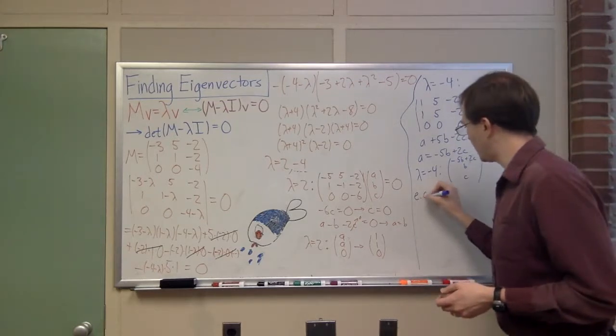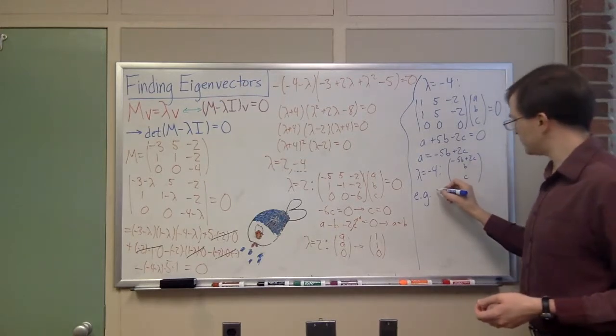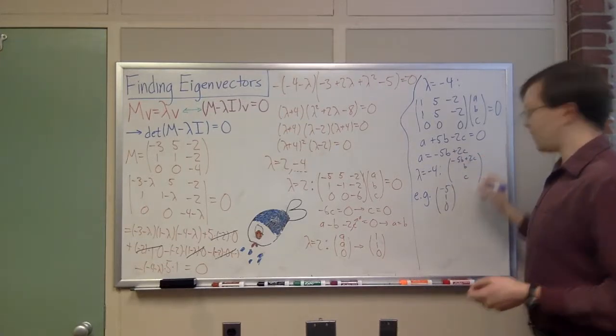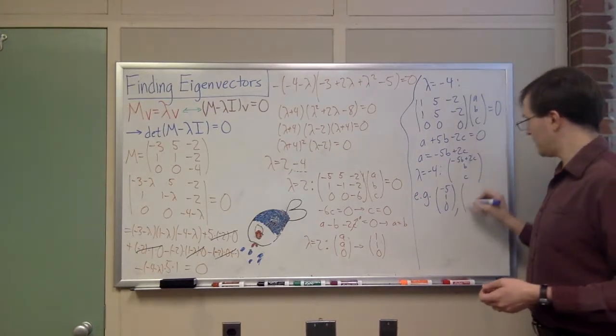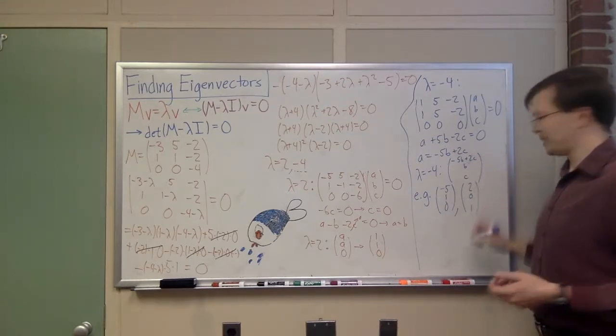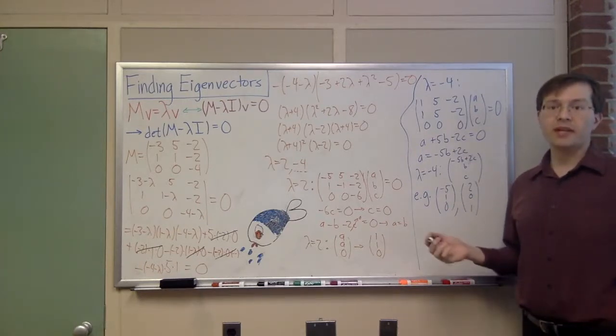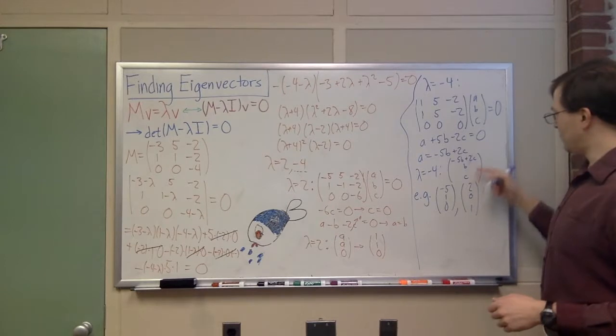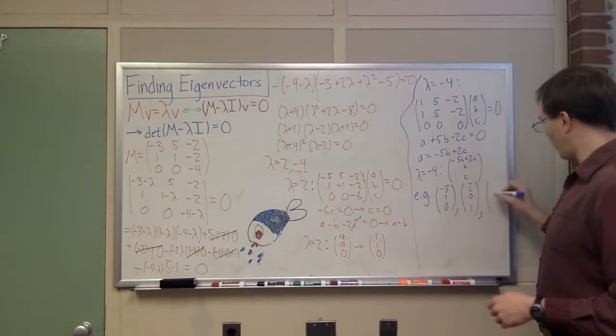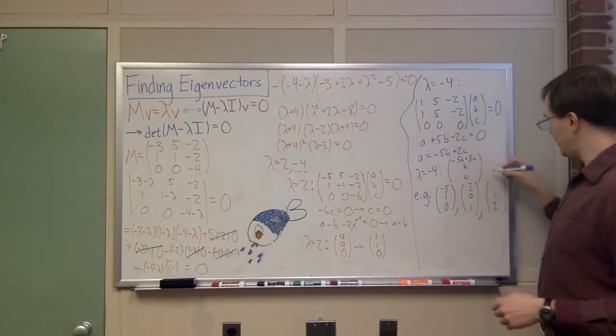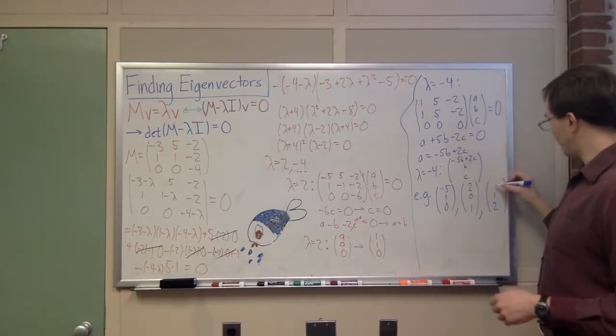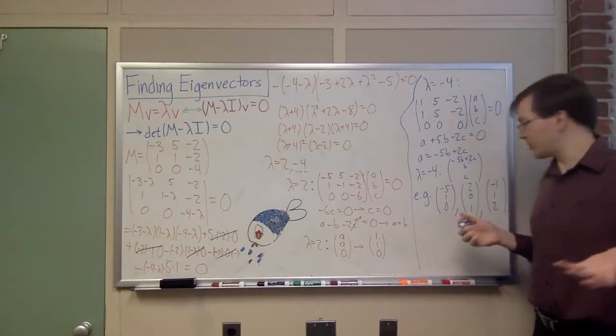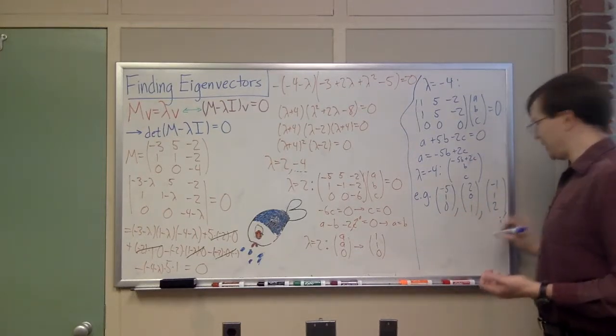Just for example, if I choose b equals 1 and c equals 0, I would get -5 times 1 plus 0, so -5, 1, 0. If I chose b equals 0 and c equals 1, I would find 0, 2, 0, 1. Those are both going to be vectors of this form. But there's so many of them. I think I gave another example. I think I said -1, 1, 2. Does that work? If I have 1 and 2 as these two, then I have 1b and 2 for c. So that would be -5 plus 2 times 2 is -1. Yeah. That works as well.